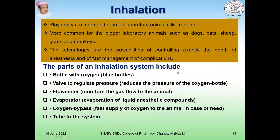Inhalation anesthetics are also widely used. They play a minor role for small laboratory animals like rodents but are more common for larger laboratory animals such as dogs, cats, sheep, goats, and monkeys. Advantages include the ability to precisely control the depth of anesthesia and fast management of complications. The parts of an inhalation system include an oxygen bottle, a pressure-regulating valve, a flow meter, an evaporator, an oxygen bypass, and tubing.